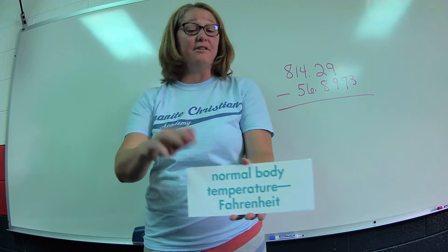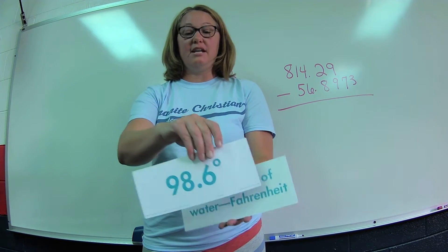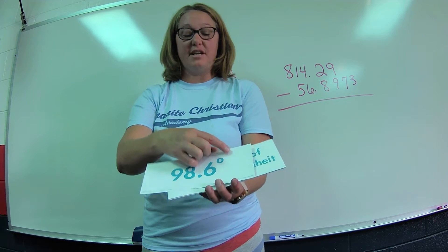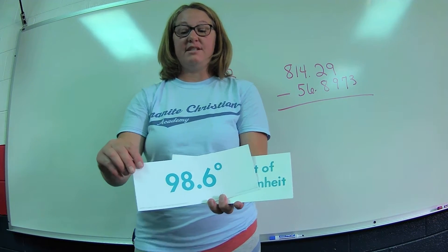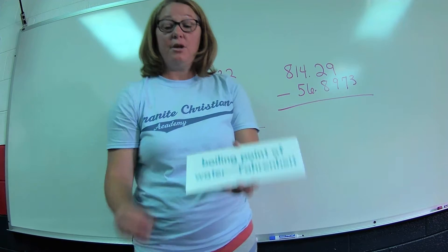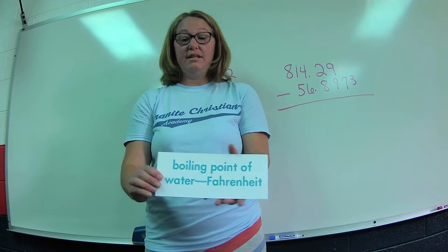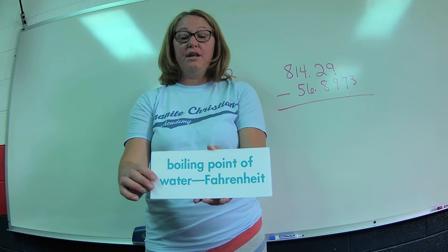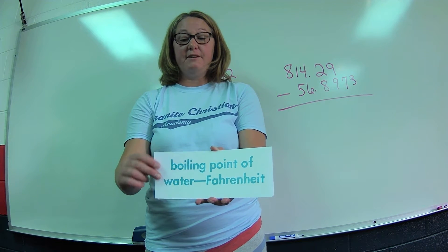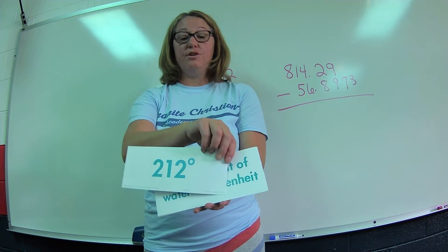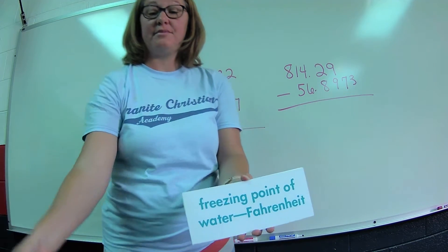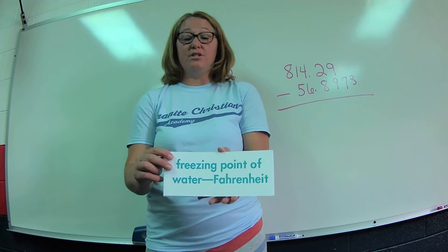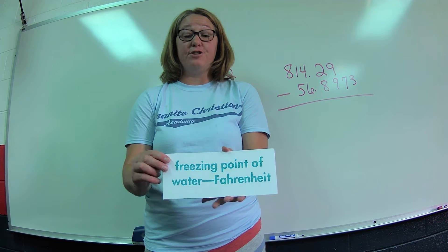Normal body temperature in Fahrenheit, can I hear you? That's right, 98.6 degrees. Remember, this little circle means degrees. What's the boiling point? This is when you put your macaroni and cheese on the stove and you want it to bring to a boil - 212 degrees. What is the freezing point? When you put your water in the freezer and you want to make ice, the freezing point in Fahrenheit is 32 degrees.